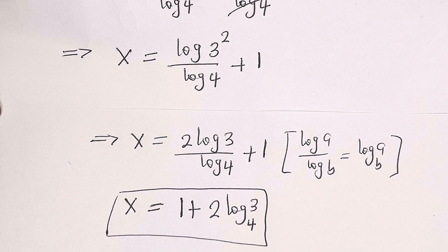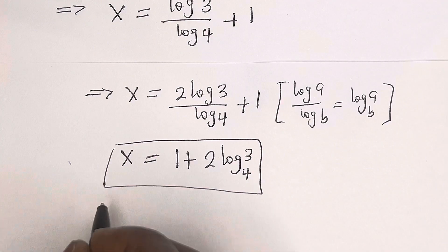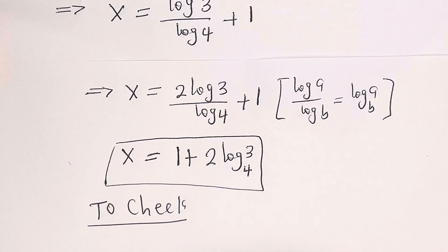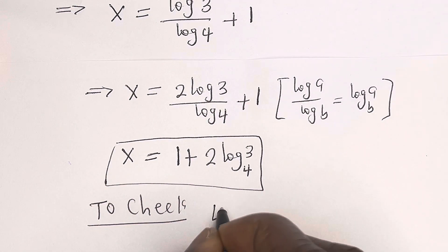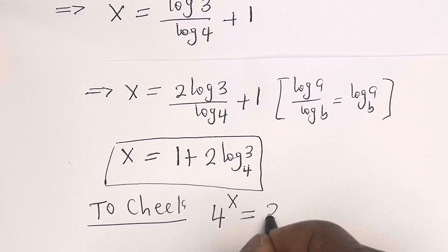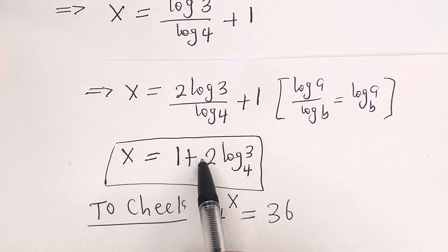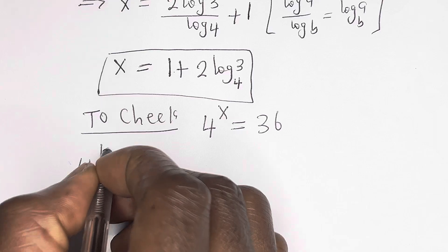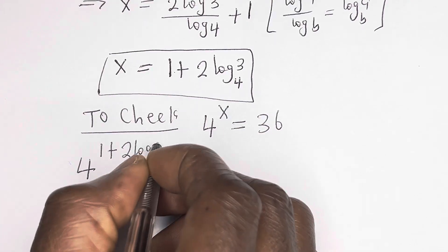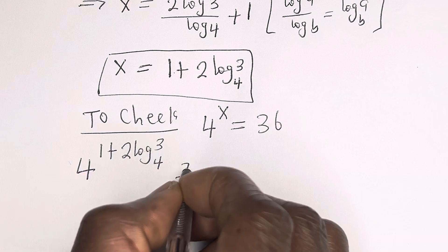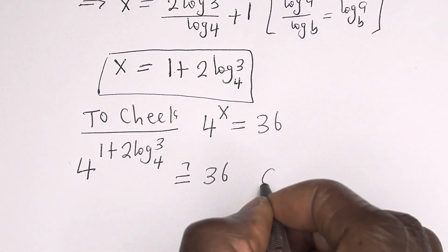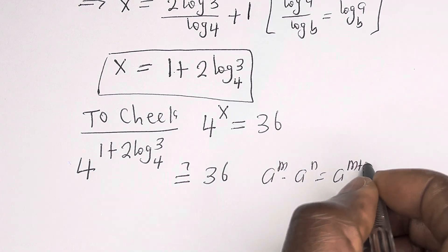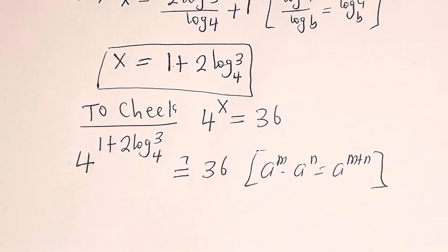We may check to confirm if this answer is right or wrong. To check, we have the given equation 4 raised to power s is equal to 36. When s is 1 plus 2 log 3 base 4, then we have 4 raised to power (1 plus 2 log 3 base 4) must be equal to 36. Note that if you have a raised to power m multiplied by a raised to power n, this is equal to a raised to power (m + n).